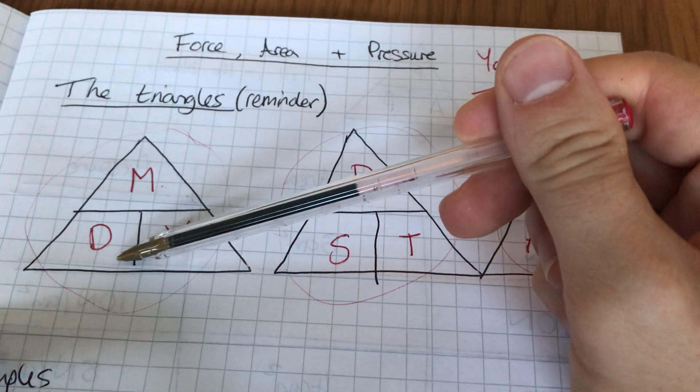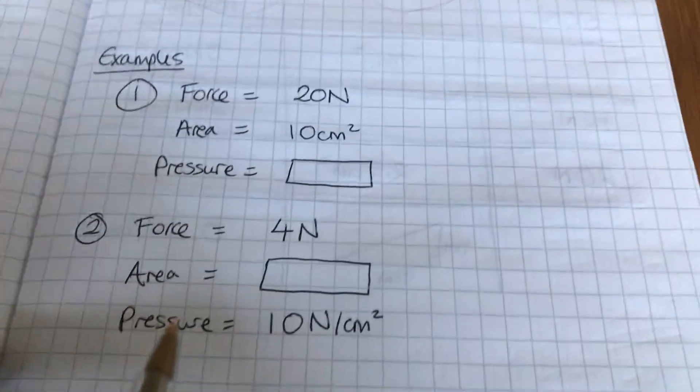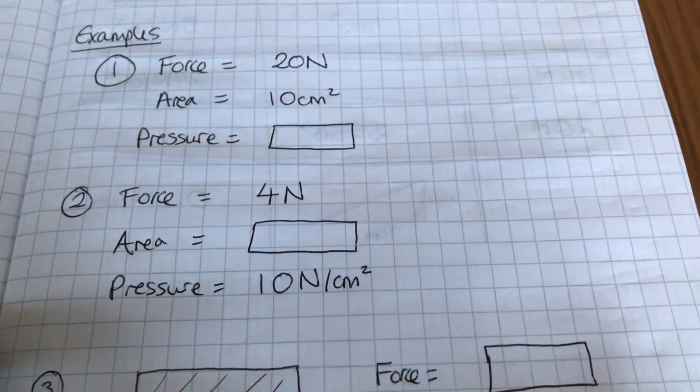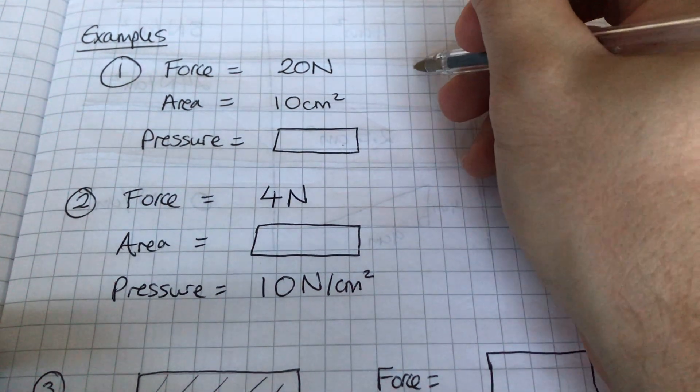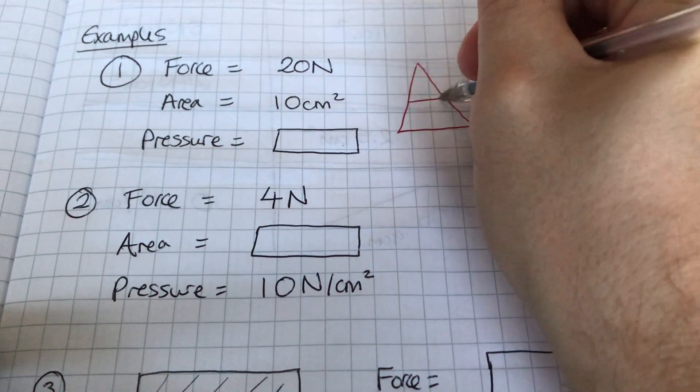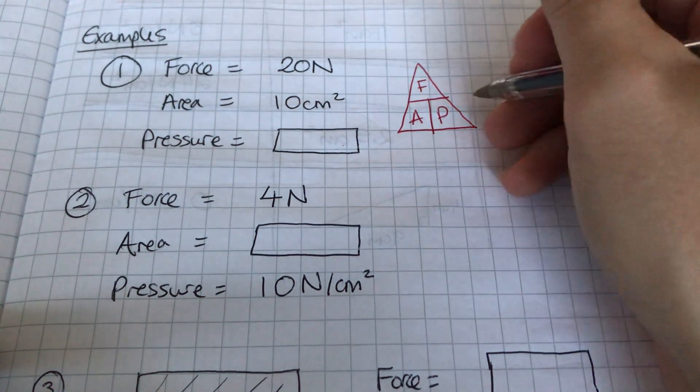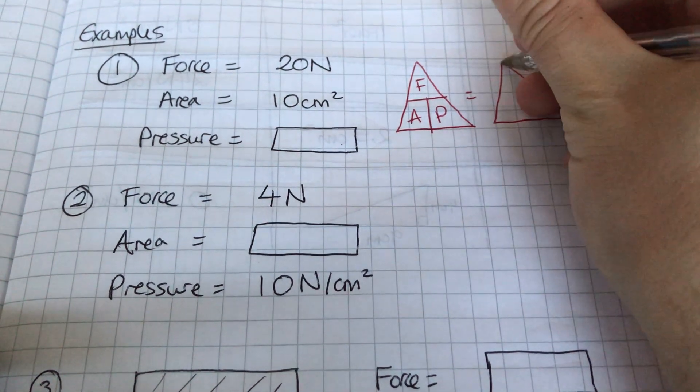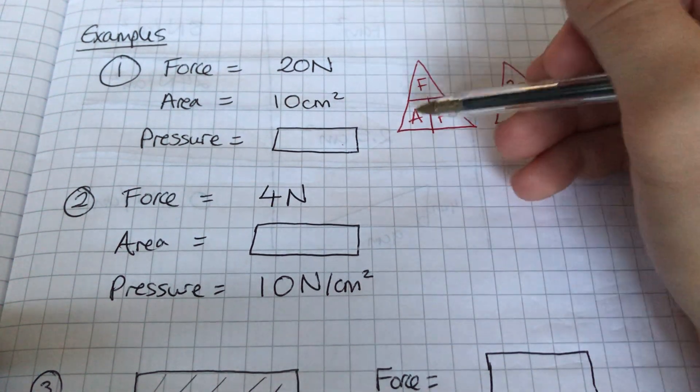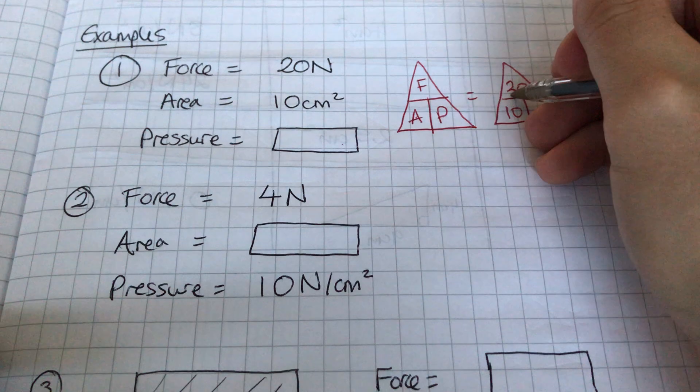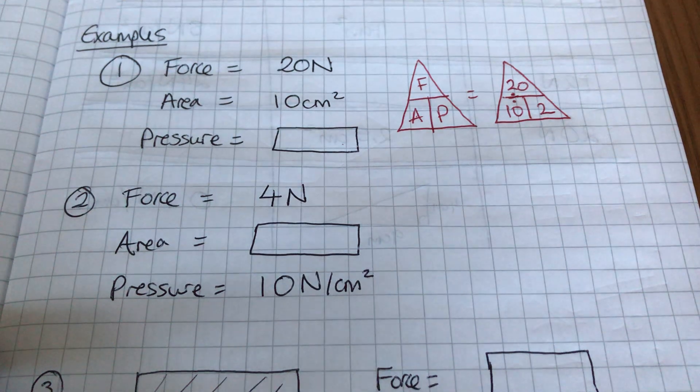Let's do some examples now then. You have got force, area, and missing pressure in this question. So straight away I know it's a force area pressure question. I'm going to draw my little triangle and fill in my force, my area, my pressure. Then I'm going to start filling that in with what I know. The force I know is 20, so I'm going to put that in there. The area I know is 10, so that goes in there, and I now know that I need to do that divided by that to get this one here.